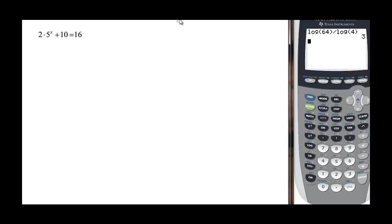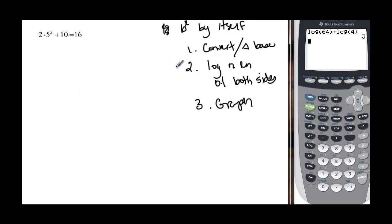Now we have an exponential equation. And remember with exponential equations, we have the choice that we have to get b to the x by itself. We have to do that first. But then we have choices. We could convert it and change the base, or we could take the log or natural log of both sides, or we could graph.